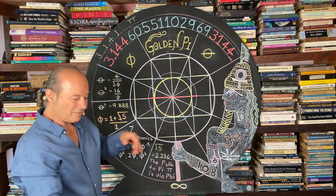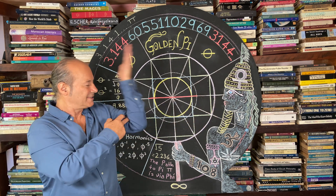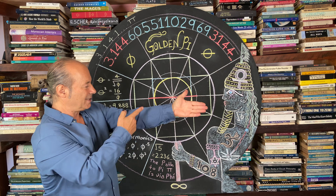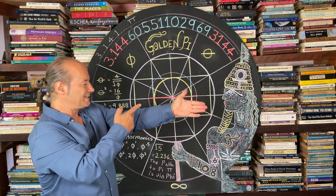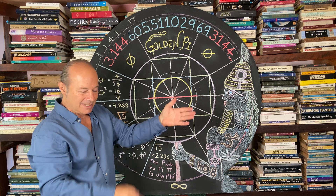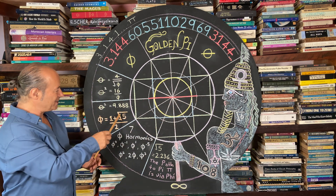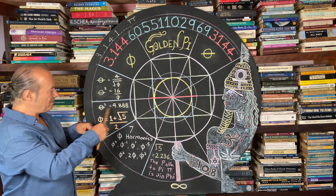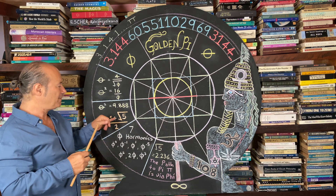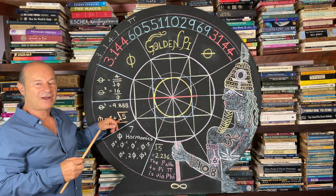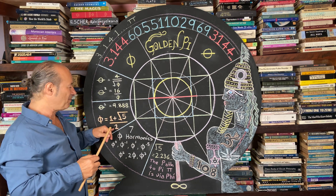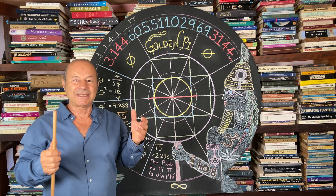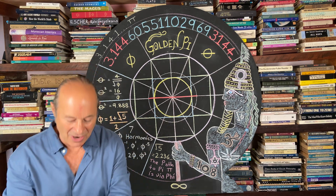The golden ratio is a ratio. You see where my elbow bends — if this is 1, the longest segment is 1.618. This ratio of 1 to 1.618 is derived by a mystical formula called 1 plus root 5 divided by 2. The issue is that most people don't understand what root 5 is.